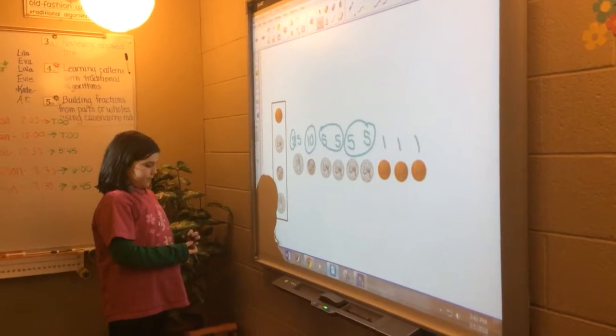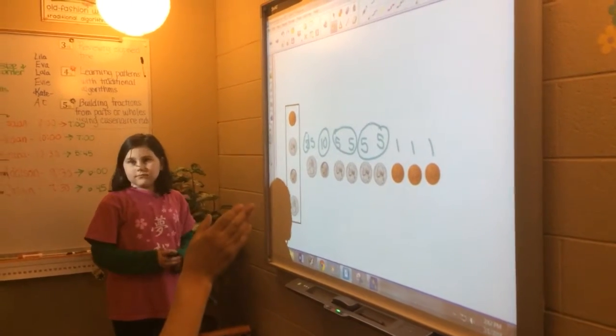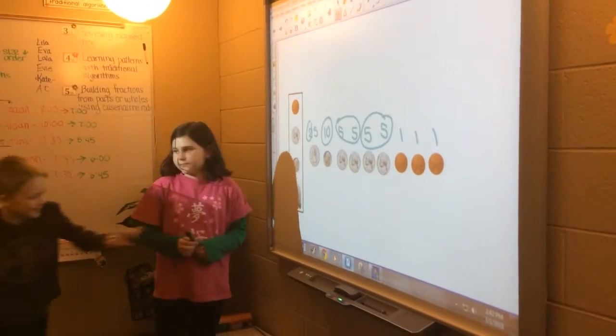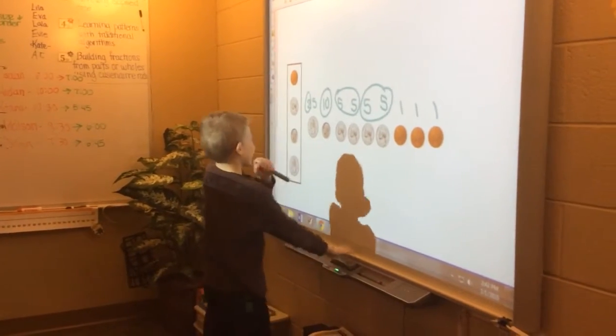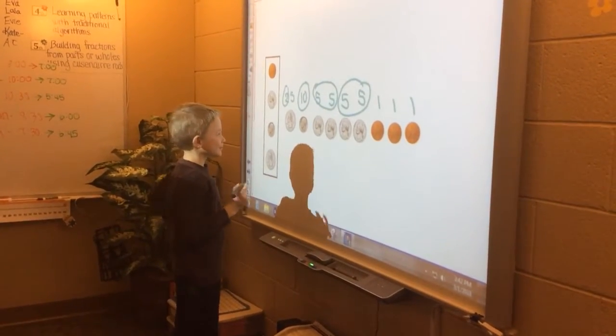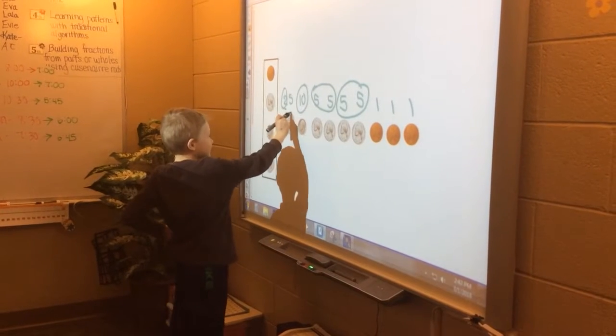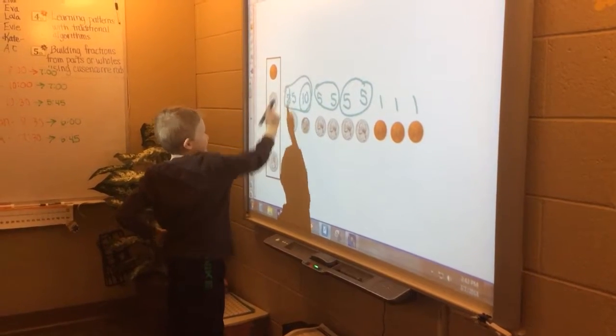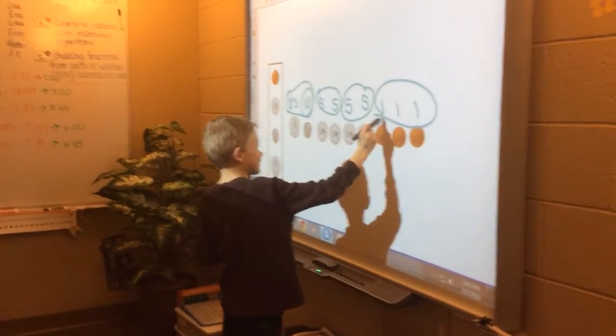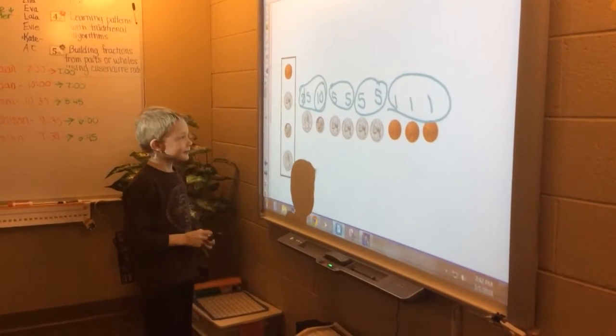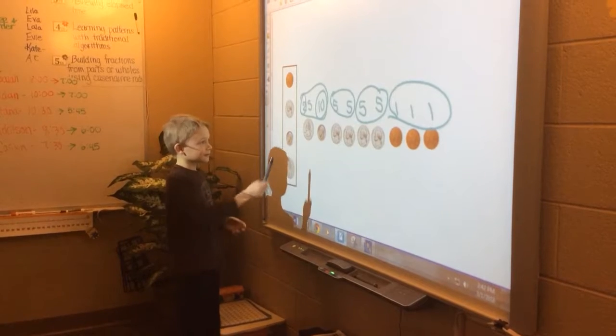Did anybody do it differently? Okay, Kaden, what did you do? I got a good one. Oh, you just added the ten on. So explain to me what that looked like in your head. You started with 25, and then what did you get?